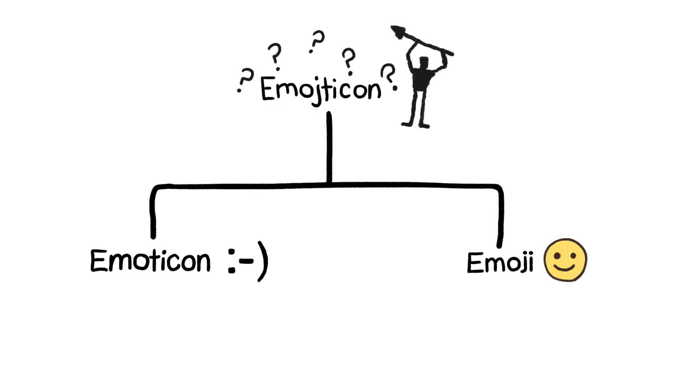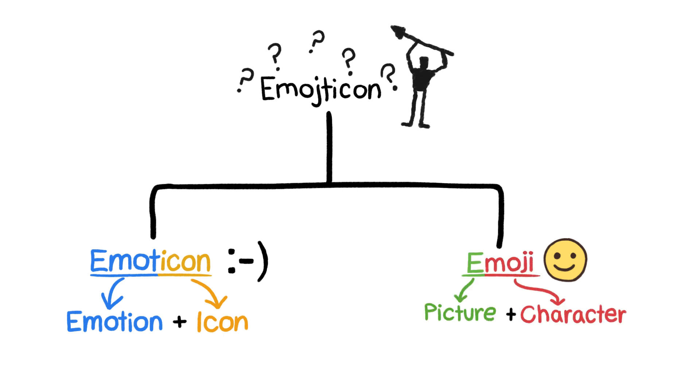Take the similar sounding words emoticon and emoji. They describe similar things, so you'd think they'd have similar origins. But emoticon is a combination of the English words emotion and icon, while the word emoji combines the Japanese words for picture and character. So the two words don't actually hint at any hidden relationship between English and Japanese.